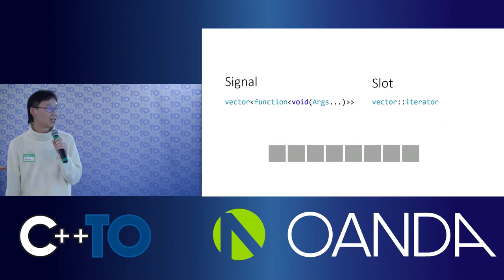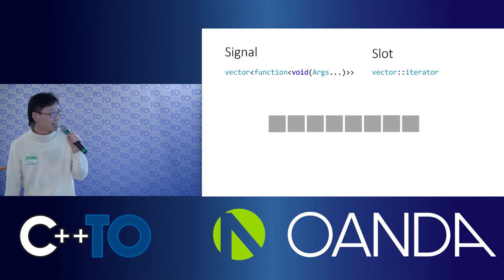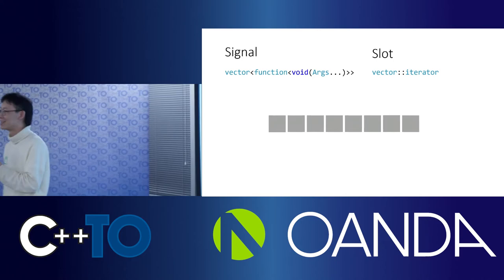So what is a signal and a slot? I can tell you in one sentence: it's just a std::vector of std::function. That's it for signal and slots in the single-thread case.